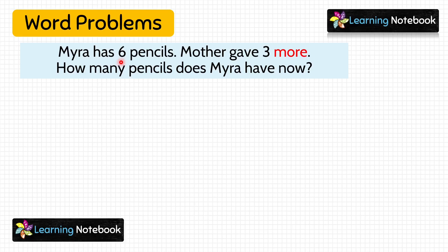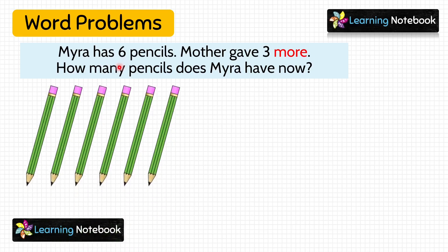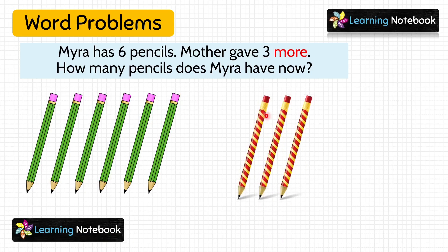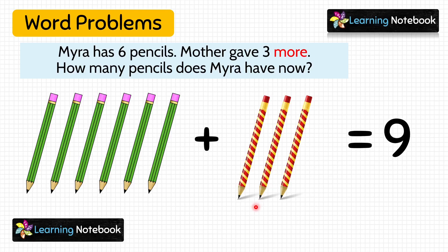There are 2 ways to solve this. In the first way, Myra has 6 pencils — these are the 6 pencils. Then mother gave her 3 more — these are 3 more pencils. Now let's count them. We know these are 6 pencils. So after 6, count: 7, 8, 9. In total, these are 9 pencils. So this is our answer — Myra has 9 pencils.